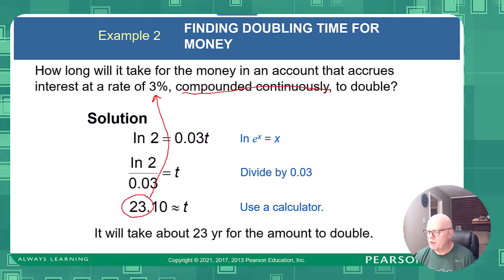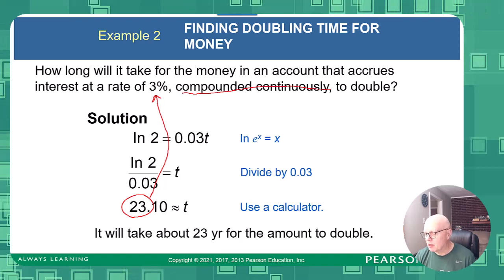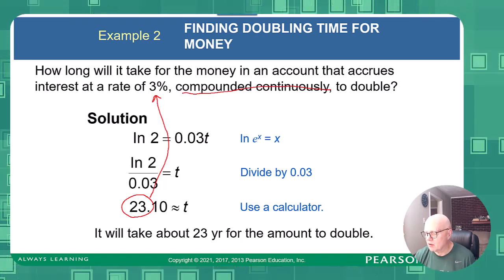That gives approximately 23 years to double your money at a 3% rate compounded continuously.